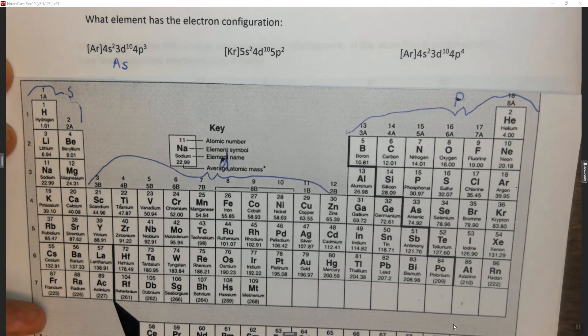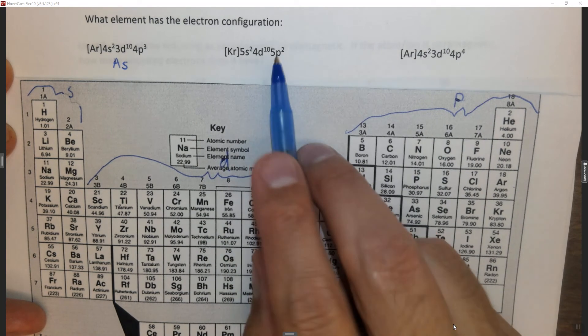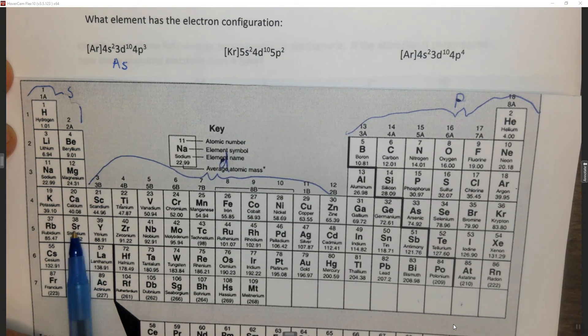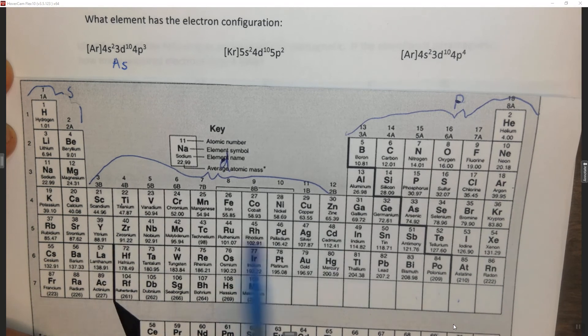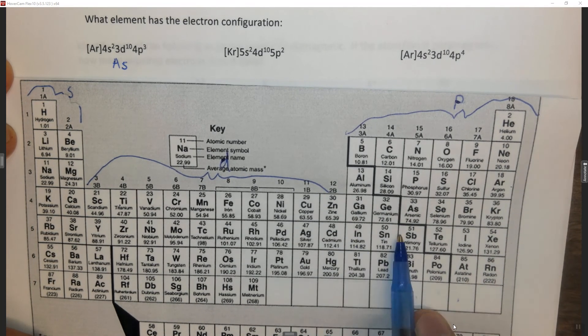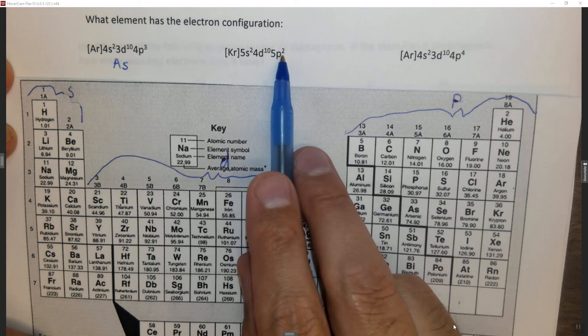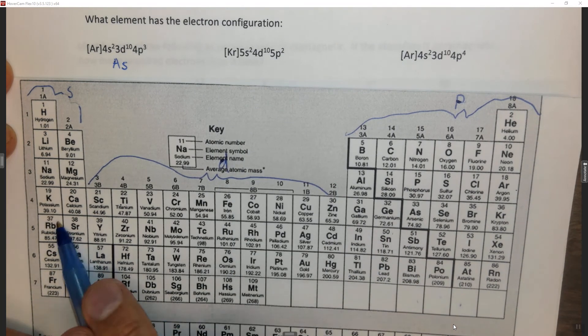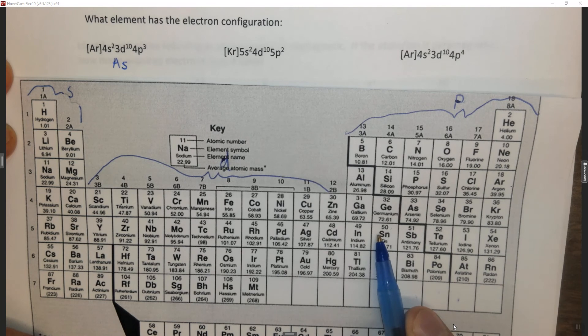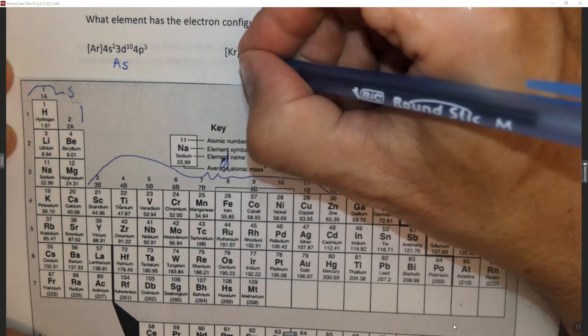Another way you could do this is you could just look at the last one, 5p². So I go down to five, this is the 5S, this is the 4D, and this is the 5P, one, two. So the last electron is in 5p², so that means this is the 5S, 4D, 5P, one, two, so this has to be ten.